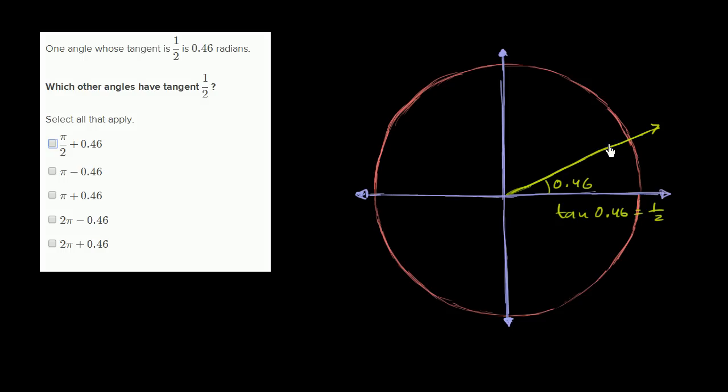Another way of thinking about the tangent of an angle is that's the slope of that angle's terminal ray. So it's the slope of this ray right over here. That makes sense that that slope is about a half.